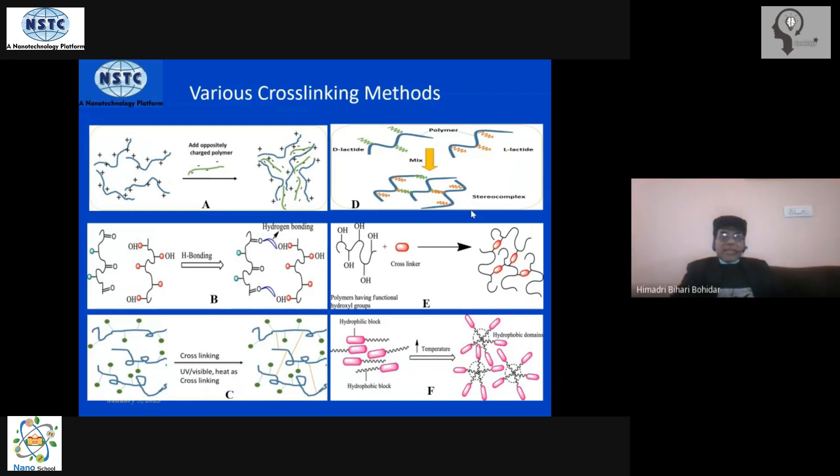There are different ways of creating cross-links in the system. So you have oppositely charged polymers—there are two of them. You can put them together, and then because of electrostatic interaction, they will selectively bind and form a network structure.